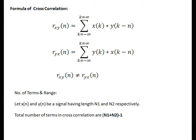Here, x is fixed and there is a lagged version of y. R_yx(n) is equal to summation k from minus infinity to infinity of y(k) into x(k minus n). Here, y(k) is fixed and there is a lagged version of x. Note that R_xy(n) is not equal to R_yx(n).